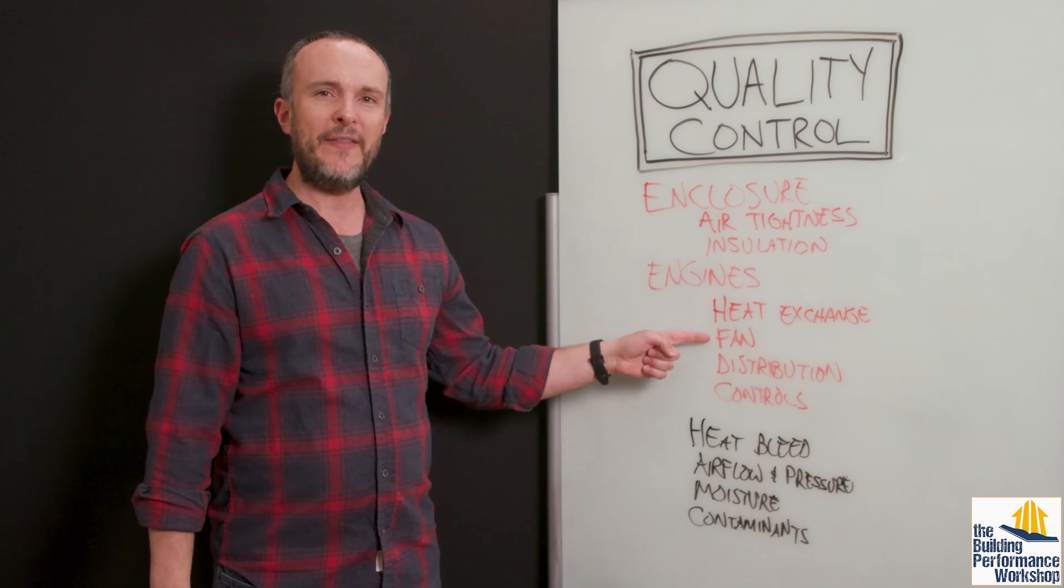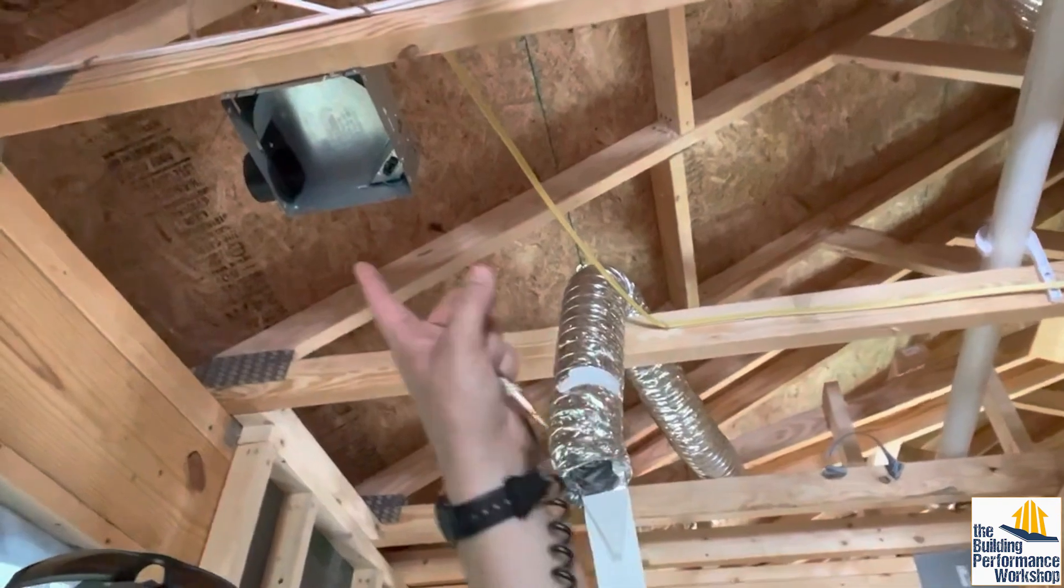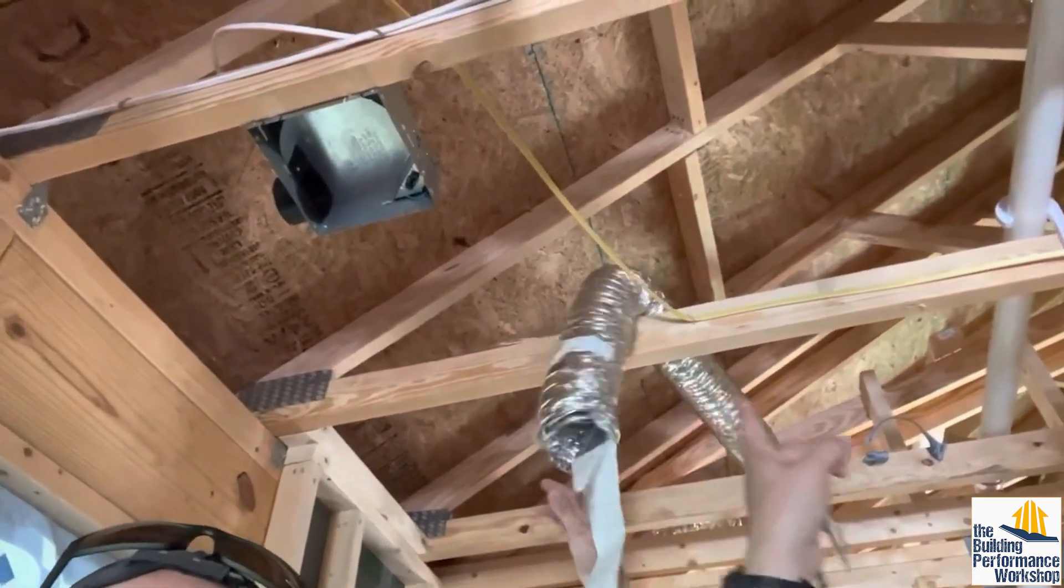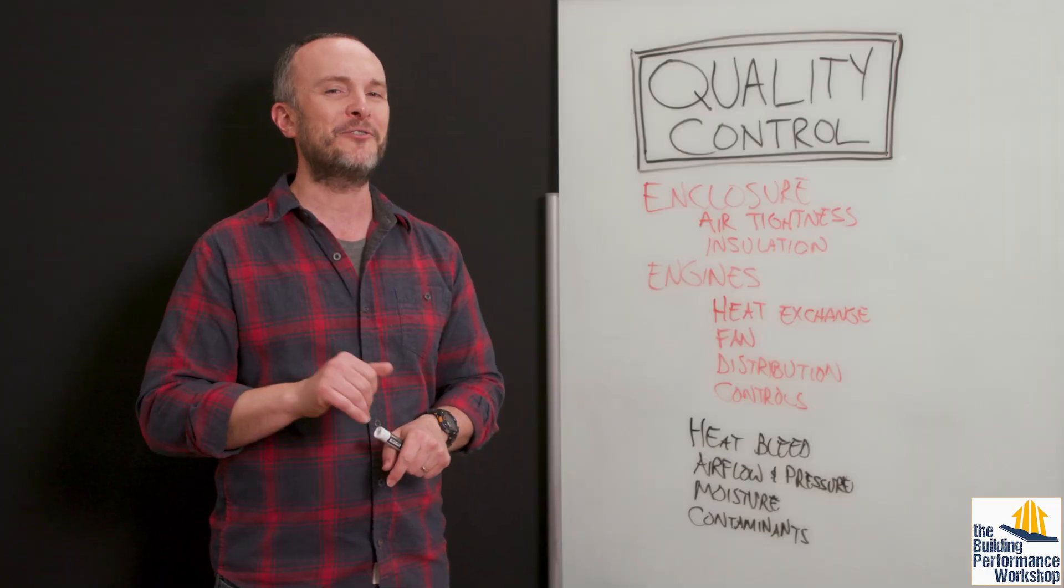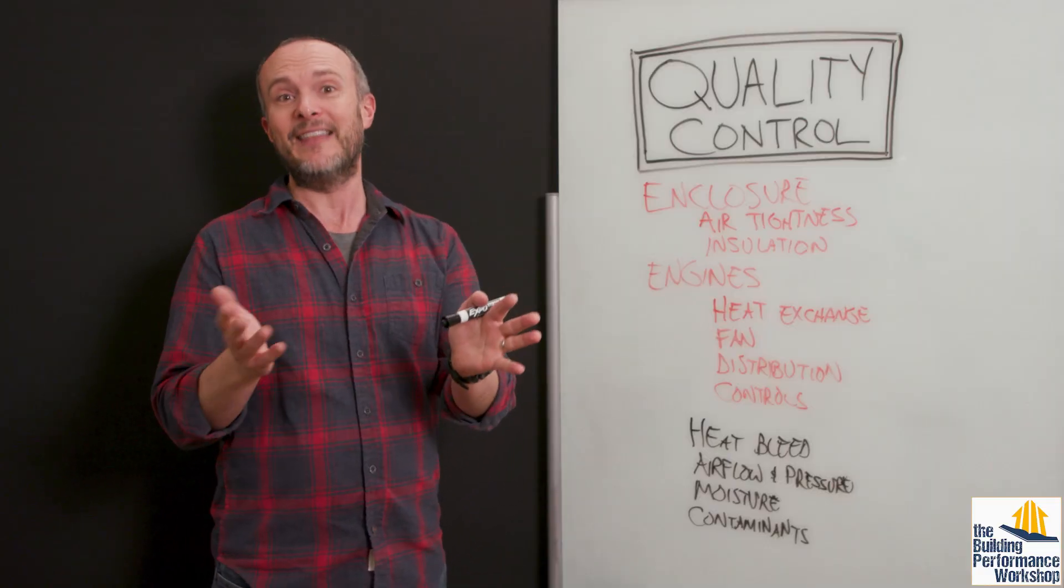The fans around the house—bathroom exhaust fans, for example—you want to make sure those are tested to be within, let's just pick a real loosey-goosey number, say 10% of what it says on the label. A bath fan that's rated for 50 CFM therefore should be moving between 45 and 55 CFM. It won't be moving more than that, trust me. But you want to make sure it's not less than 45.